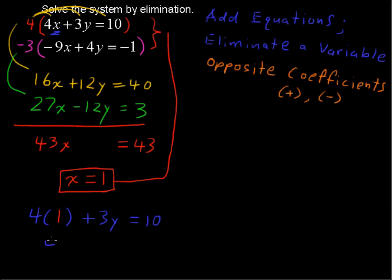Alright, let's finish this. 4 plus 3y equals 10. 3y equals 6. I've got to come up here. And y equals 2.